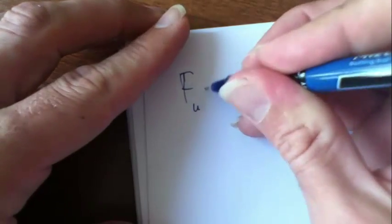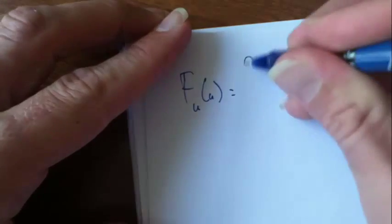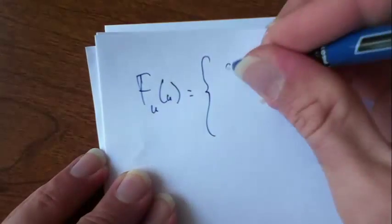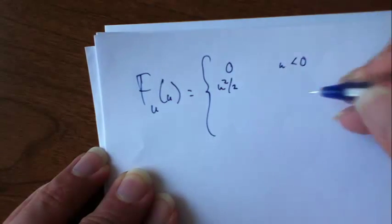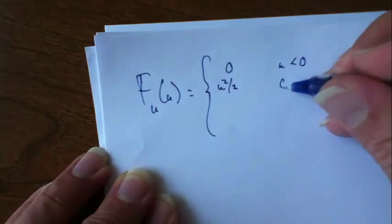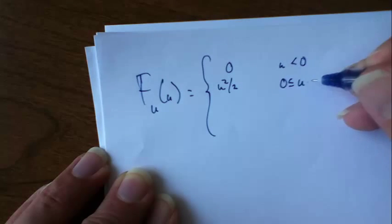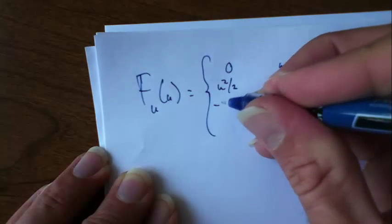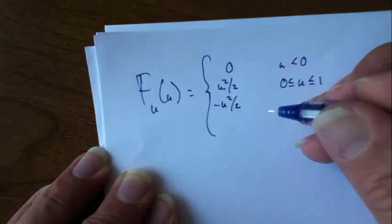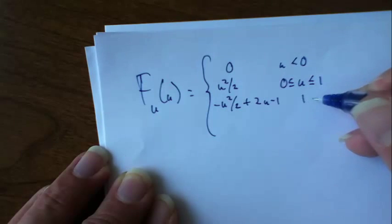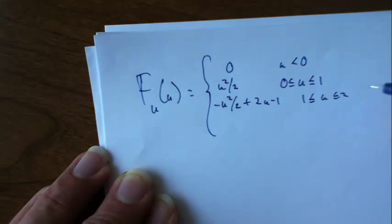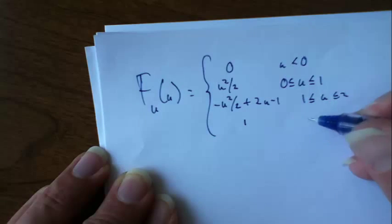So to summarize, this means that f sub u of u is 0 when u is less than 0, and it's u squared over 2 when u is between 0 and 1, and it's negative u squared over 2 plus 2u minus 1 when u is between 1 and 2, and 1 for u greater than 2.